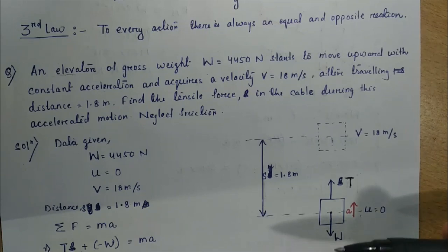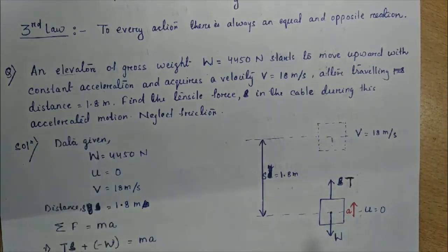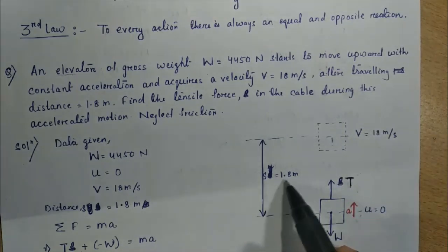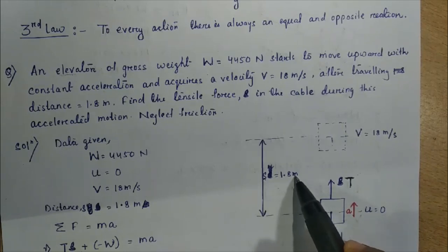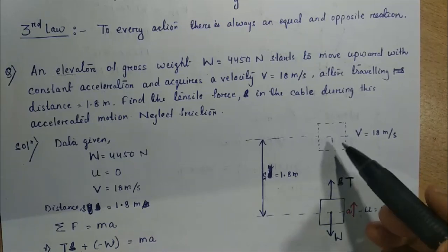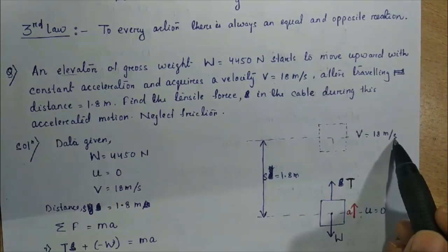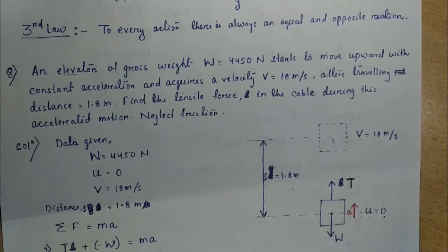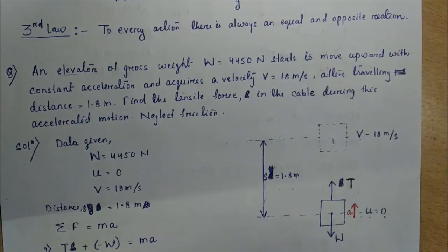The elevator is moving upward with constant acceleration A. Initial velocity U equals zero; after covering distance S equals 1.8 m it acquires final velocity V equals 18 m/s. All forces T and W act along the y-direction, so we apply summation of Fy equals MA. There is no movement along x-direction.